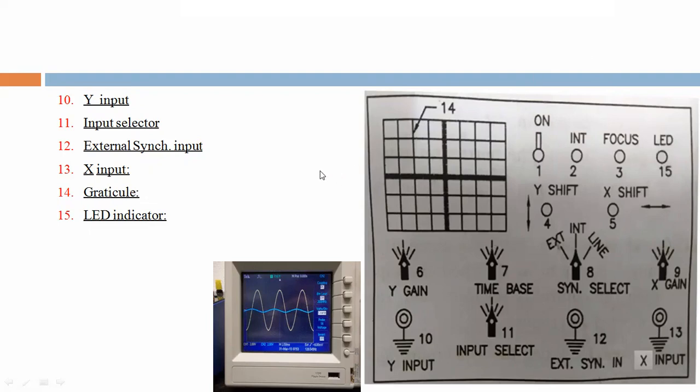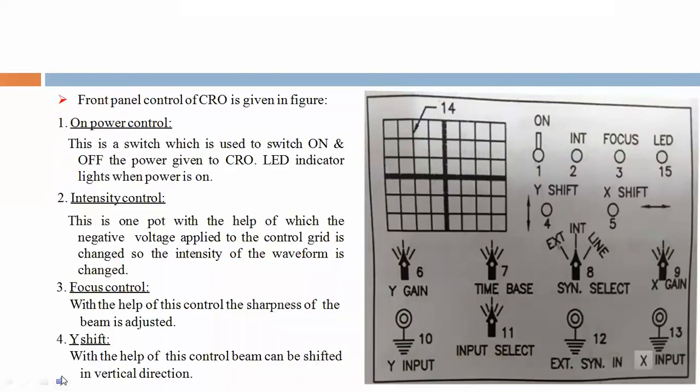Now we are saying step by step. One, on power control. The front panel control of the CRO is given in figure. This is a switch which is used to switch on and off the power given to the CRO. An LED indicator lights when power is on.